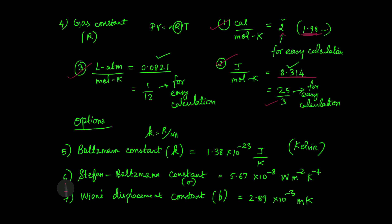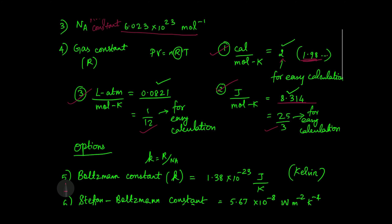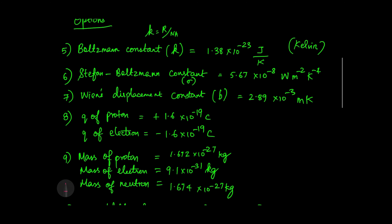In liter atmosphere per mole kelvin, the value of R is 0.0821 — easy calculation uses 1 by 12 per mole kelvin. So when solving problems, choose the R value based on the units given in the answer options: whether it is in calories, joules, or liter atmosphere.